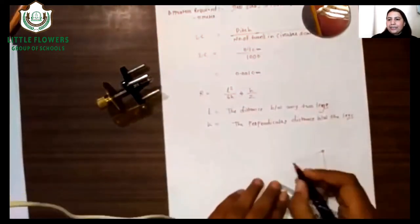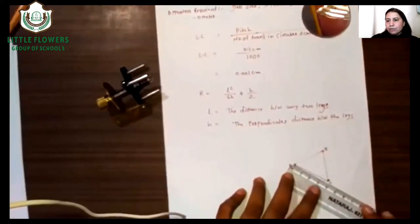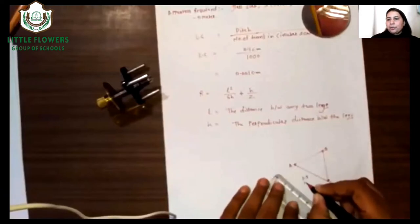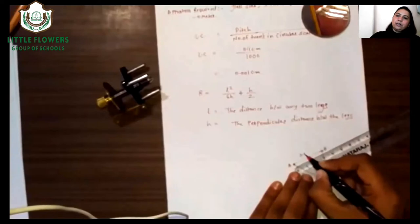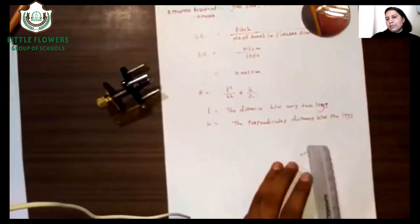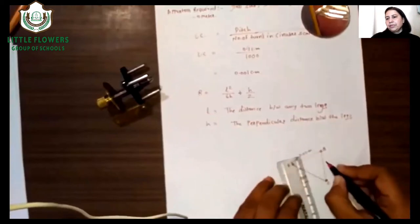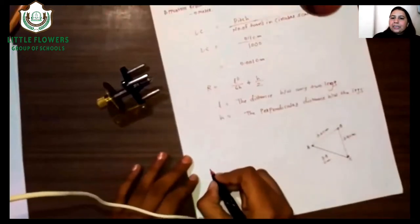Joining the dots forms a triangle. Let us name the vertices of this triangle A, B, and C. Now let us calculate the distances between the lines. We measure: AB = 3.9 cm, BC = 3.1 cm, AC = 3.4 cm, and additional readings of 3.2 cm and 3.4 cm, 3.2 cm.